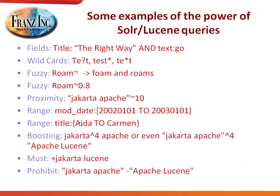Just to give you an idea of how powerful Solr and Lucene queries are: if your Solr document has multiple tags per entry, you can search in both. You can use wildcards. You can do fuzzy search — if you say roam with a tilde, it will return both form and roams. You can do proximity search: give me all texts that have Jakarta and Apache within 10 words. You can search within date ranges, alphabetical ranges, and boosting — where Jakarta is more important than Apache. You can specify what must be included or excluded. It's a fairly powerful query language.